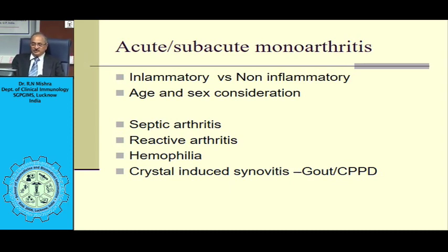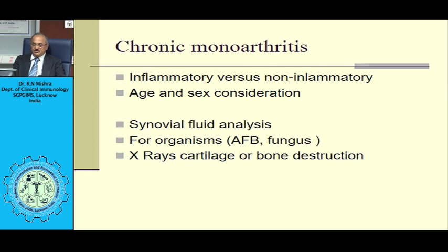Monoarthritis means a single joint is affected. Acute or subacute monoarthritis means the duration of symptoms is less than six weeks. The most important approach is to distinguish inflammatory versus non-inflammatory arthritis and to consider age and sex. For example, a non-inflammatory arthritis above 45 or 50 years old is most likely osteoarthritis.